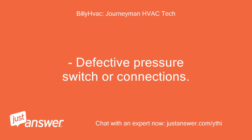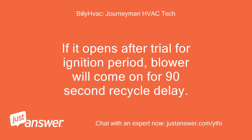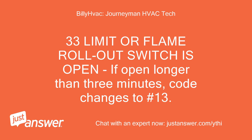Code 30: Defective pressure switch or connections. If it opens after trial for ignition period, blower will come on for 90 seconds recycle delay. Code 33: Limit or flame rollout switch is open. If open longer than 3 minutes, code changes to number 13.